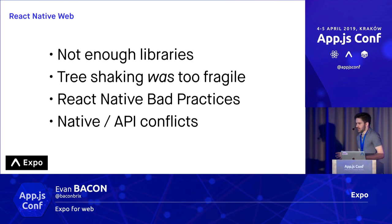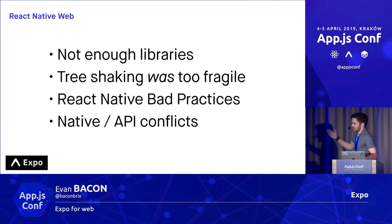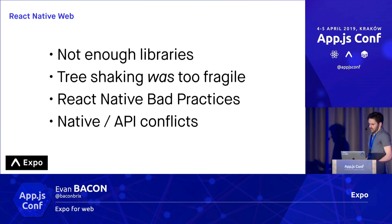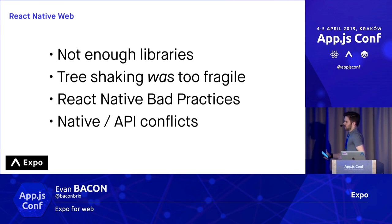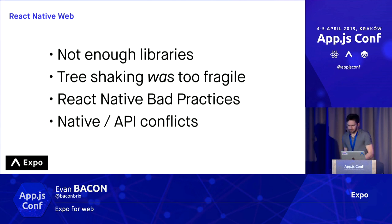The tree shaking was pretty fragile. If you did something like import an unsupported library from React Native for Web, it would break the tree shaking and pull in everything, and you would have this massive bundle size. There was a lot of bad practices — not in React Native for Web, but just in the community — things that worked on React Native, but then when employed with Web, it just made things break.